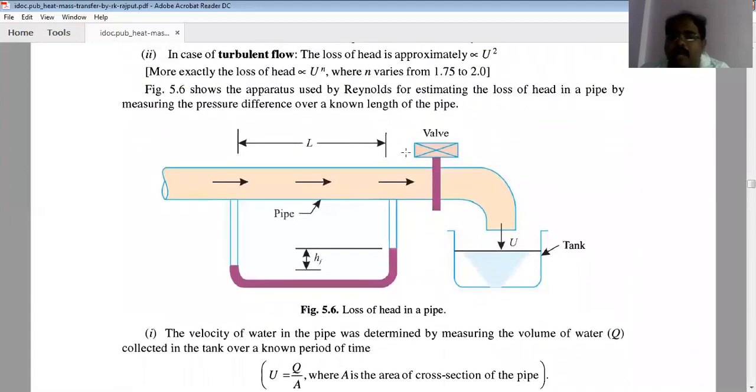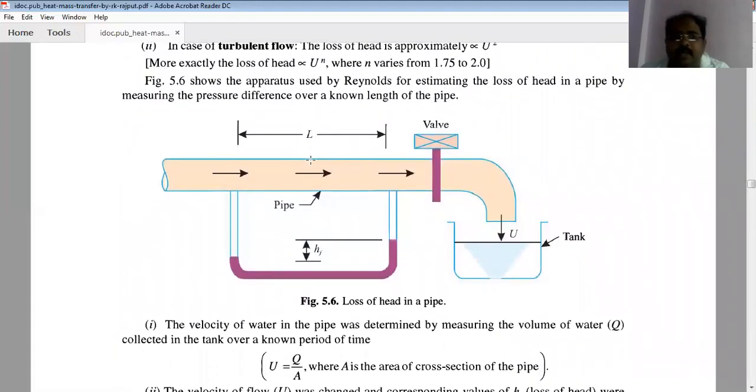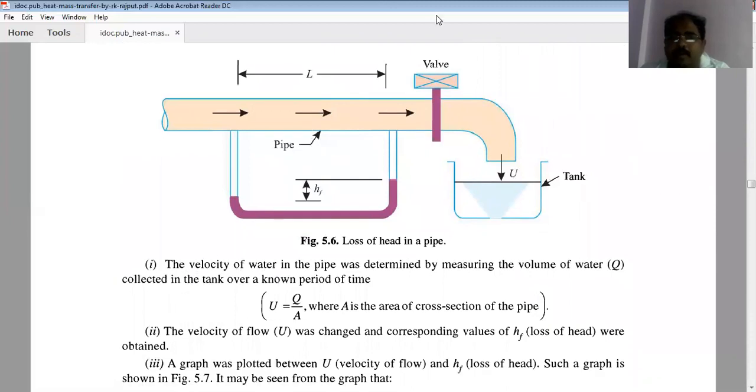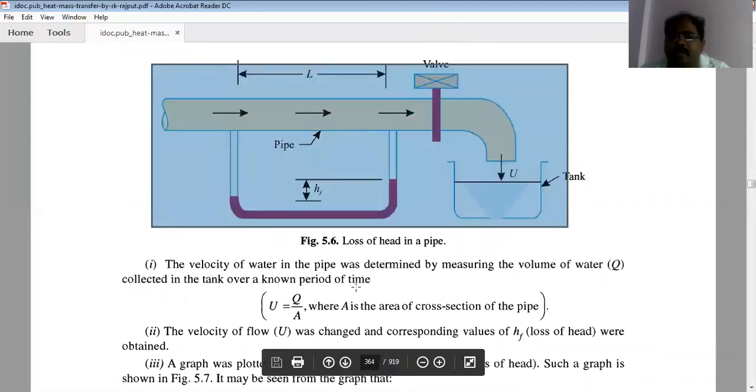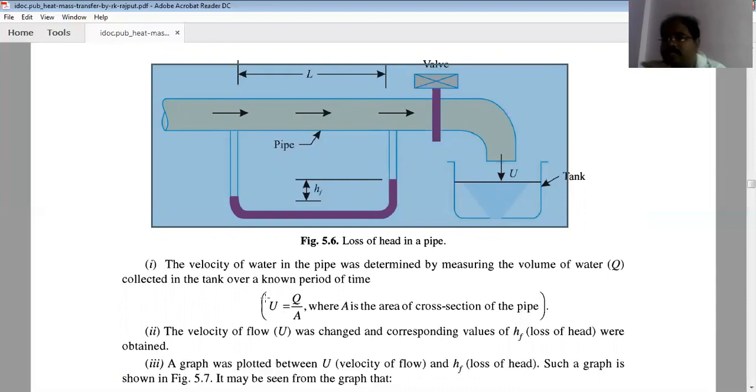The velocity of water in the pipe was determined by measuring the volume of water collected in the tank over a known period of time. We know that rate of discharge equals A times V, area times velocity. If you know the discharge rate and the area of the pipe, you can find the velocity of the flowing fluid.